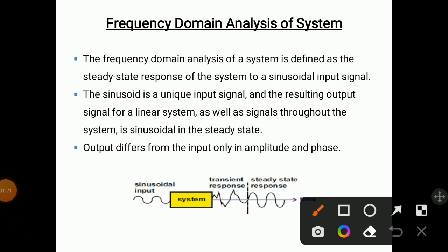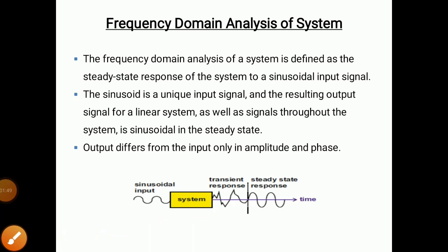As shown in the graph, we have a closed-loop system and we are applying a sinusoidal input to it. The output is also sinusoidal, but there are two variations: one is the transient response, which shows variation in amplitude and phase, and the other is the steady-state response, which is a sinusoidal waveform. So frequency domain analysis refers to this steady-state response of the system to a sinusoidal input.